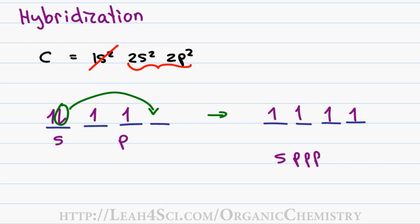and the designation for this would be s times p times p times p. In math when you have something times itself it becomes squared, times itself again becomes cubed and so the hybrid orbital is sp cubed or simply sp3.